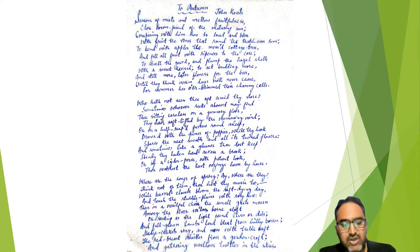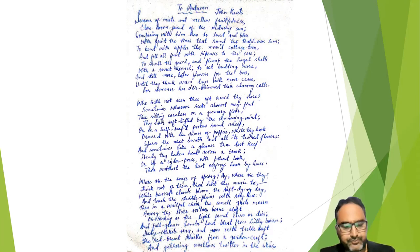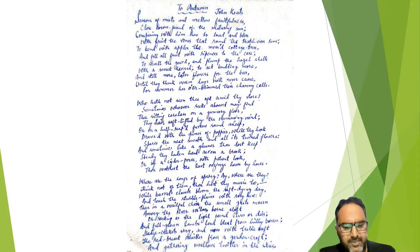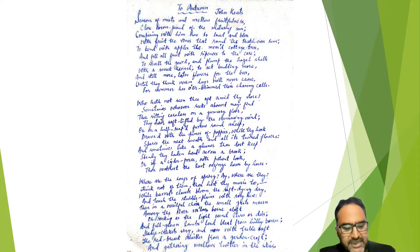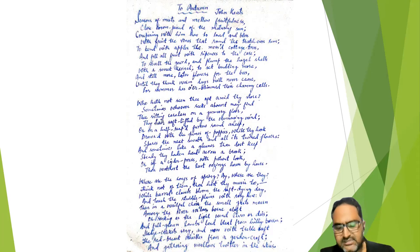Stanza two: 'Who hath not seen thee oft amid thy store? / Sometimes whoever seeks abroad may find / Thee sitting careless on a granary floor, / Thy hair soft-lifted by the winnowing wind; / Or on a half-reaped furrow sound asleep, / Drowsed with the fume of poppies, while thy hook / Spares the next swath and all its twined flowers: / And sometimes like a gleaner thou dost keep / Steady thy laden head across a brook; / Or by a cider-press, with patient look, / Thou watchest the last oozings hours by hours.'